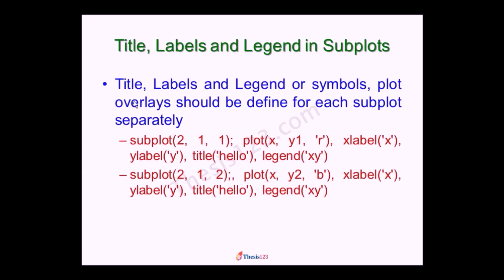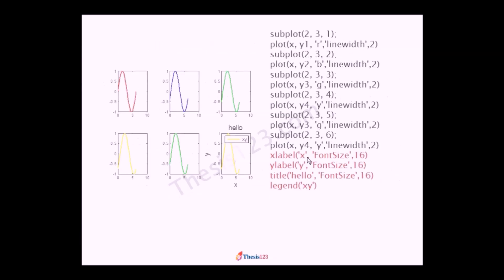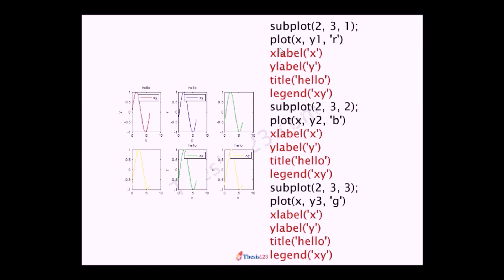Coming to how to give labels: normally, you give labels after the plot command. So here also, for each subplot, after calling the subplot command you go for the plot, and then for each plot you have to give the title, labels, and legend. If you give them only at the end, only the last plot will get them. So, for example, I have 6 subplots and at the last one I gave xlabel, ylabel, title, and legend — those labels appear only on the last one. Instead, you must give them individually for every subplot — first plot gets its title, second one gets its title, and so on.